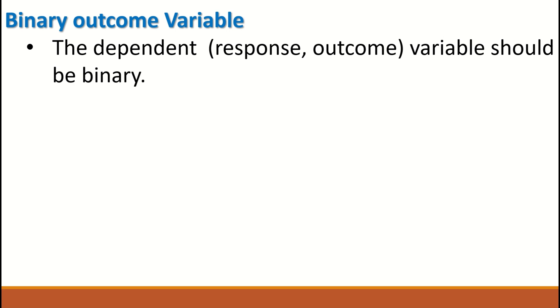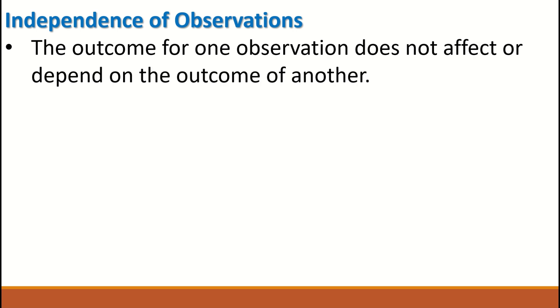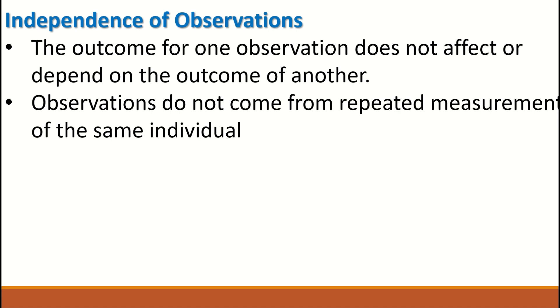The second assumption is the independence of observations. Independence of observations means that the outcome for one observation does not affect or depend on the outcome of another. In other words, observations do not come from repeated measurements of the same individual. Observations are not related to each other in any way.